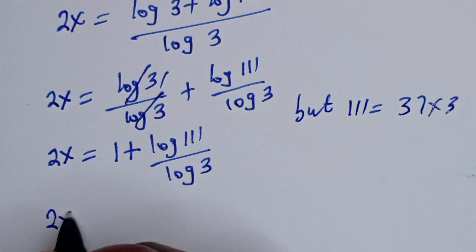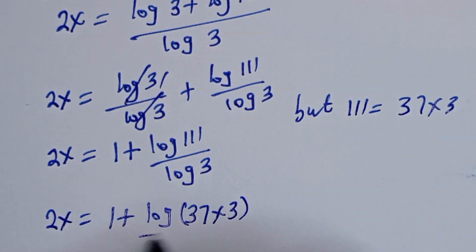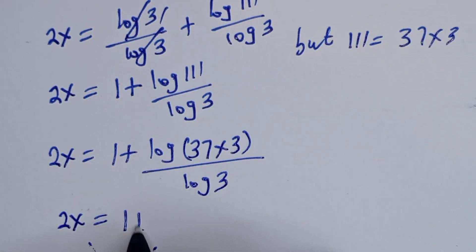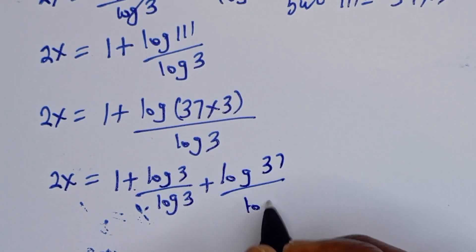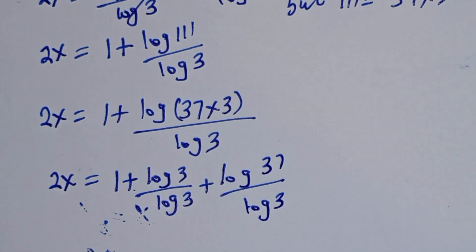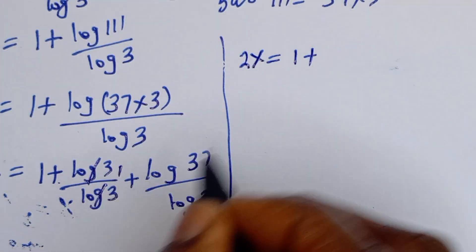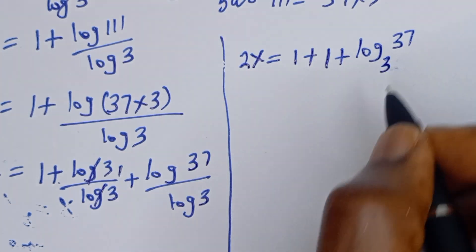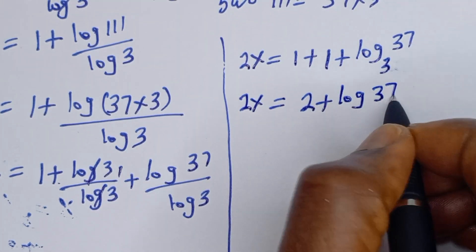We have 2S is equal to 1 plus log of 37 multiplied by 3, divided by log 3. This simplifies to 2S equals 1 plus log 3 over log 3 plus log 37 over log 3. Then 2S equals 1 plus 1 plus log₃(37), which gives 2S equals 2 plus log₃(37).